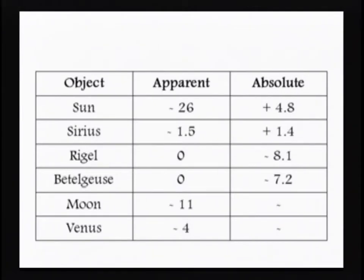Our sun is really, really close to us. Its apparent magnitude is about -26, which is extremely bright. But if I look at it at a distance of 10 parsecs, the absolute magnitude is only about 4.8 — and that's a positive, not a negative. So if we were far away from the sun, it wouldn't be very bright in the sky.